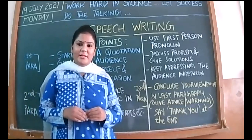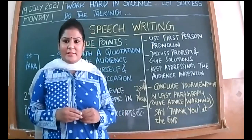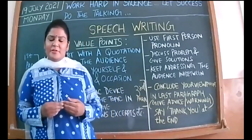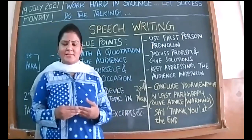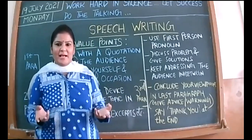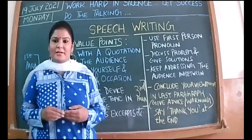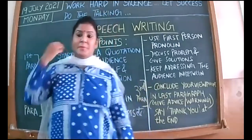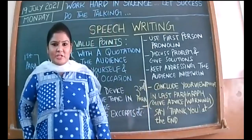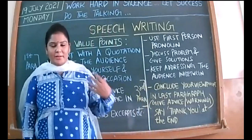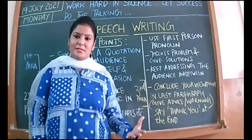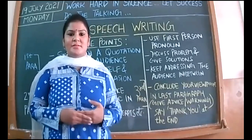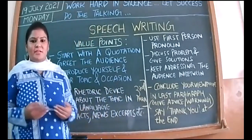Whether you are talking to your fellow mates or to an aged audience sitting in front of you, you have to be very respectful. The way you address the audience changes depending on who they are. If they are your classmates, you can address them as 'my dear friends.' If it's aged people or people on higher designations, you say 'my august audience' and 'respected gentlemen.'